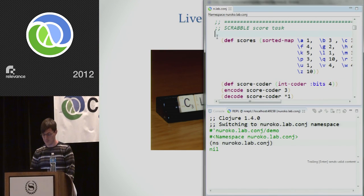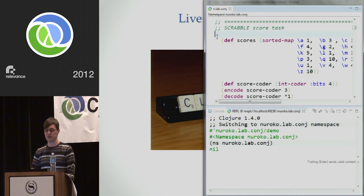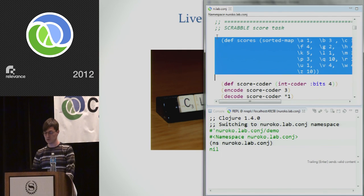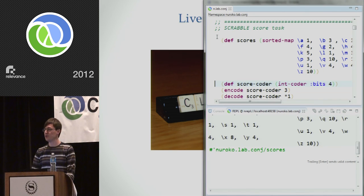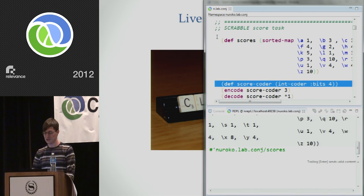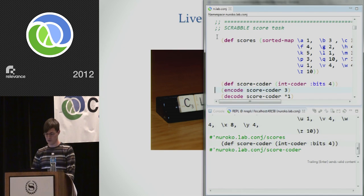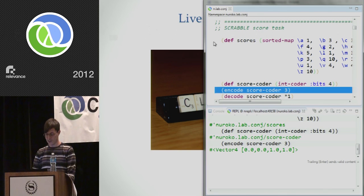This is Scrabble. This is a great game. I'm very fond of playing this with my family. And one of the distinctive features of this game is that each character is associated with a numerical score. So what we're going to do is really simple. We're going to teach a neural network what the right score is for each character. So let me just switch over into demo mode. Okay. So we're going to start off by defining the actual data that we're going to use for training. So this is the scores for each character. And this is just a simple sorted map. You can see a is worth 1, z is worth 10, and all the other characters have their own scores.